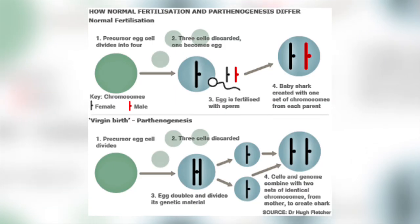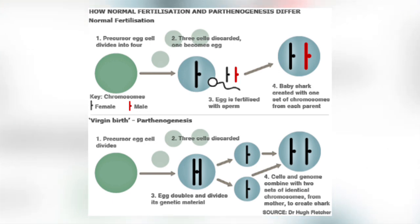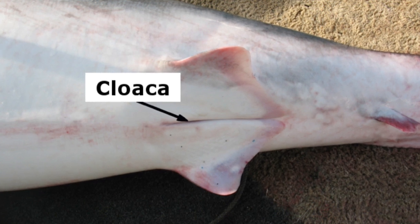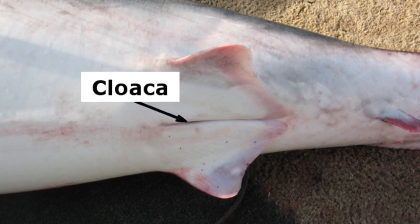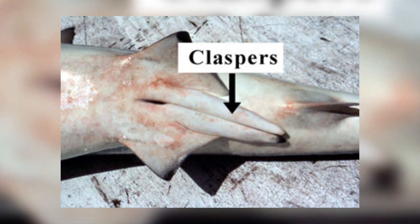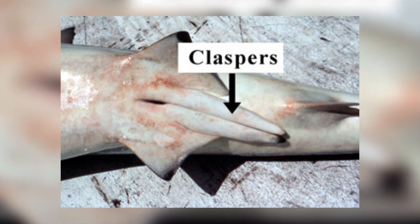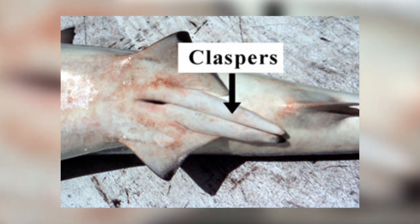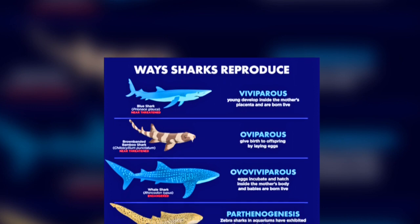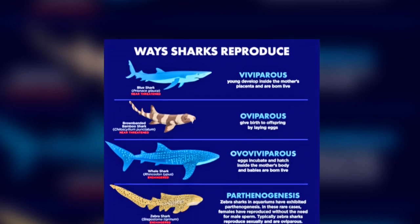In parthenogenesis, an egg can develop into an embryo without being fertilised by a sperm. The process of courtship varies with shark species, but fertilisation occurs internally by the male inserting one of his claspers into the female's cloaca. What happens next again depends on the species.